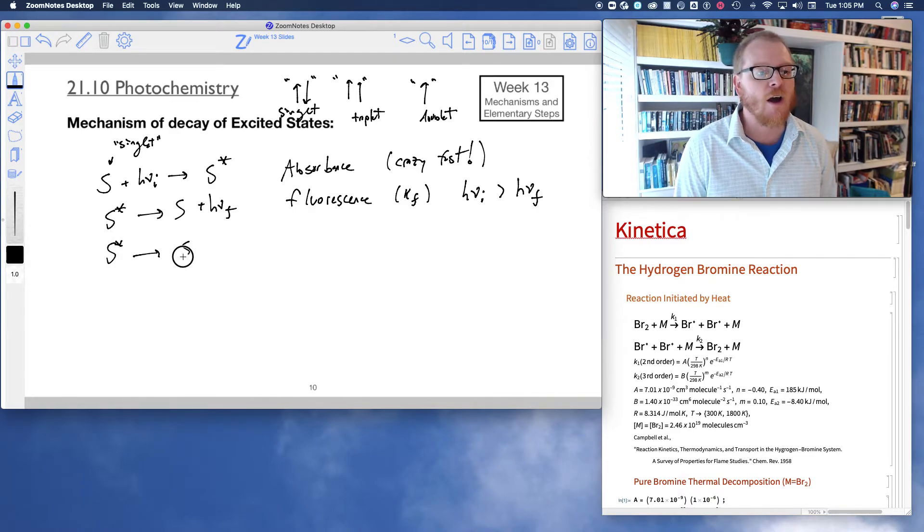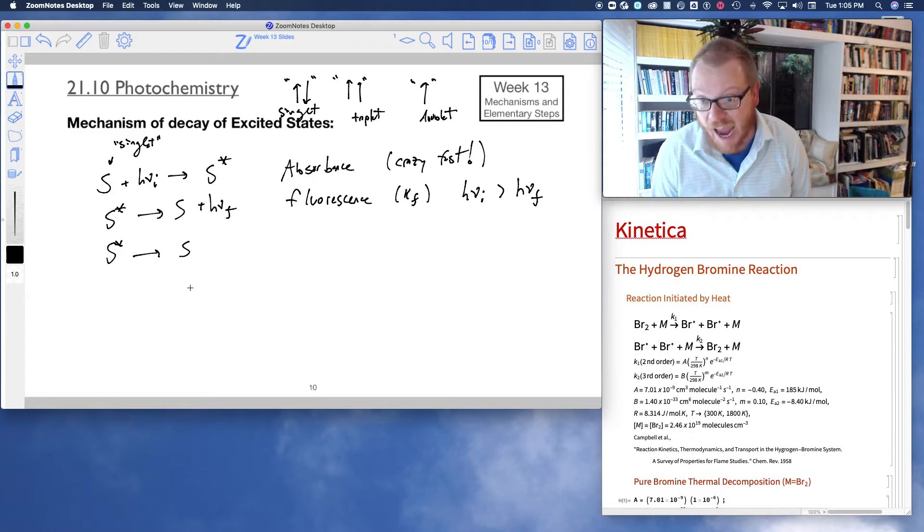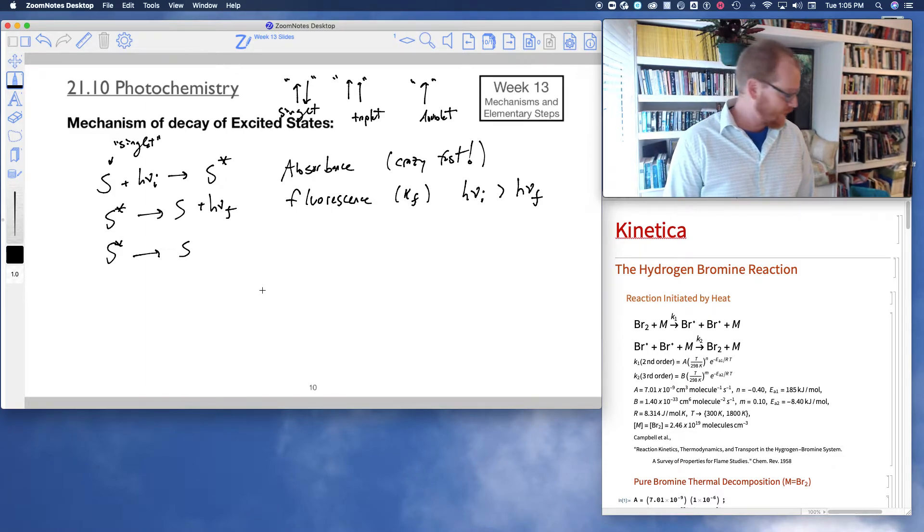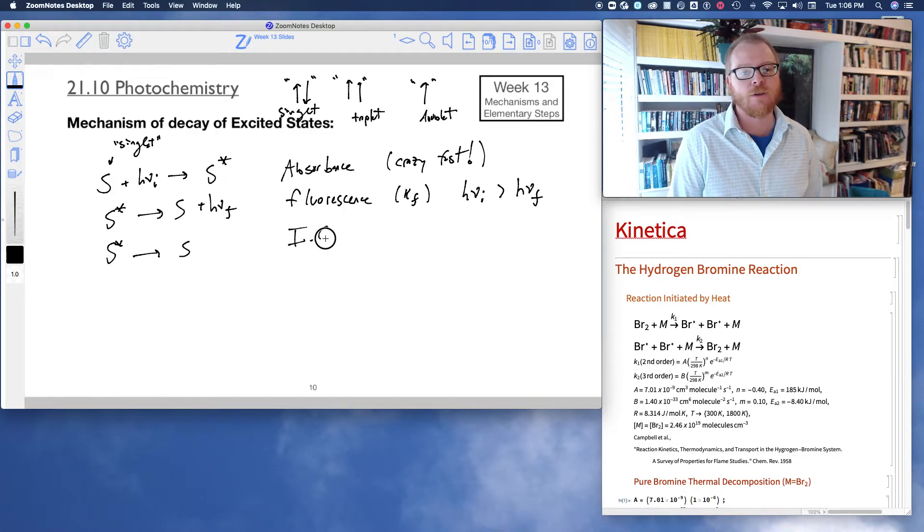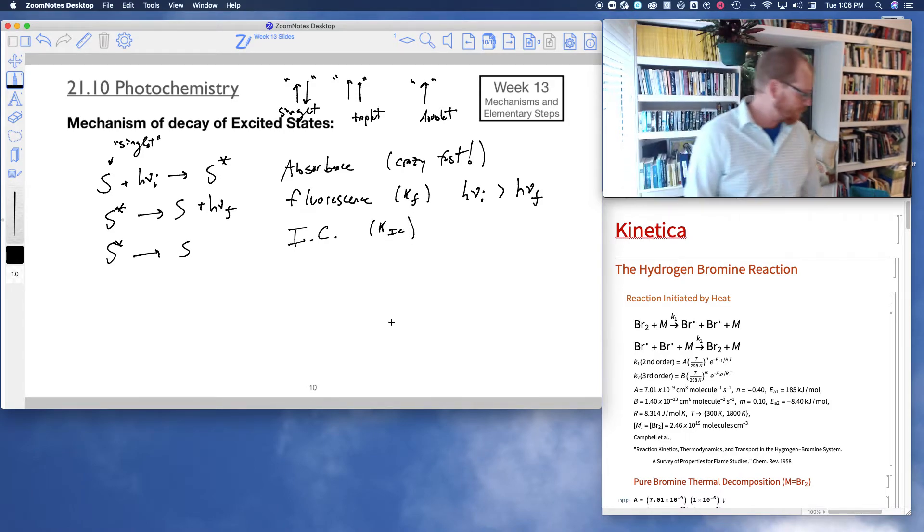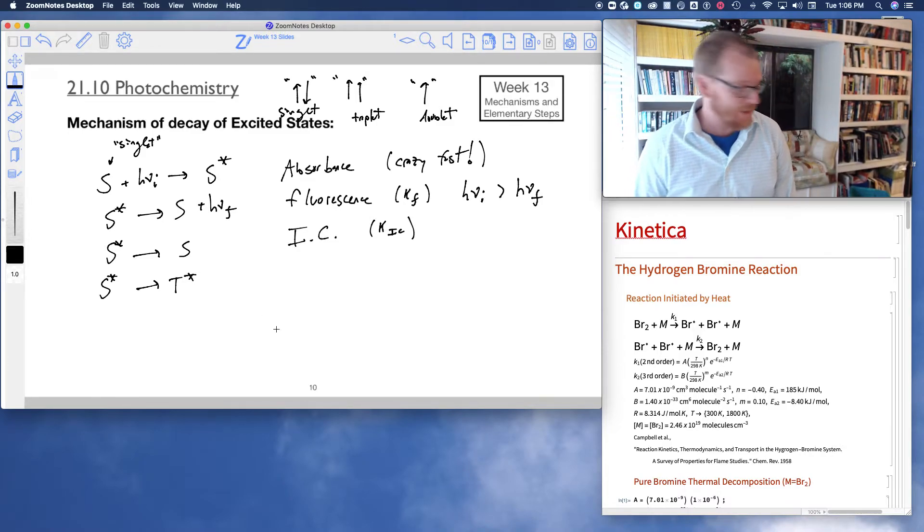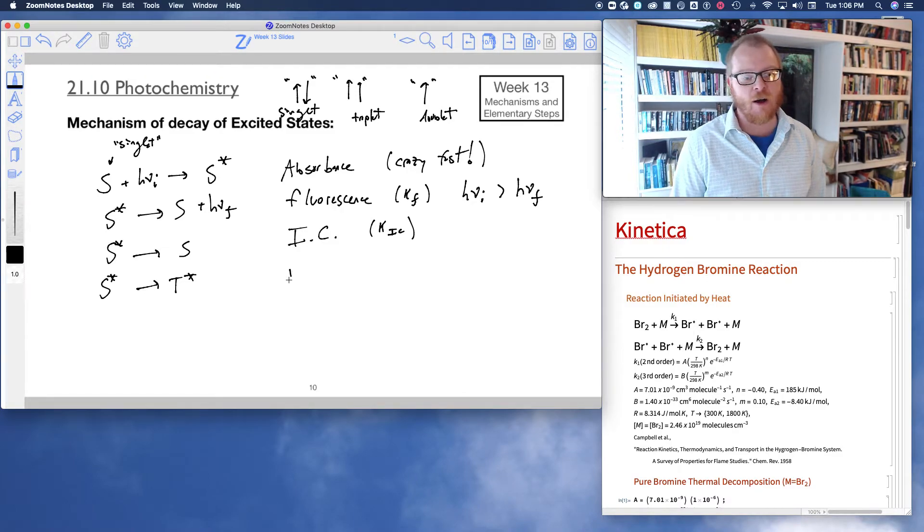So that's called fluorescence. So another thing that could happen, of course, is our excited state could just decay back down to a ground state. We call that internal conversion. Internal conversion, and that happens at rate constant KIC. Or our singlet excited state could actually convert into a triplet excited state. And that's called inter-systems crossing. I'll call that ISC, inter-systems crossing.